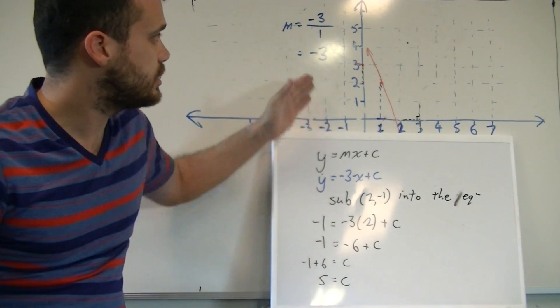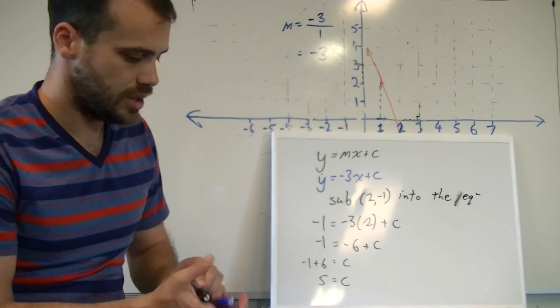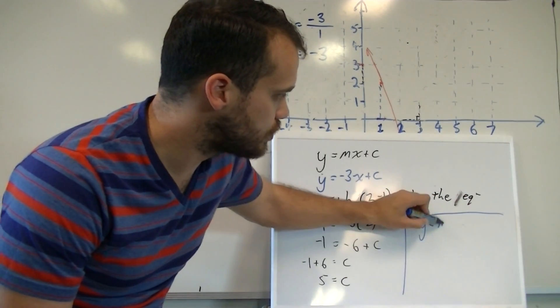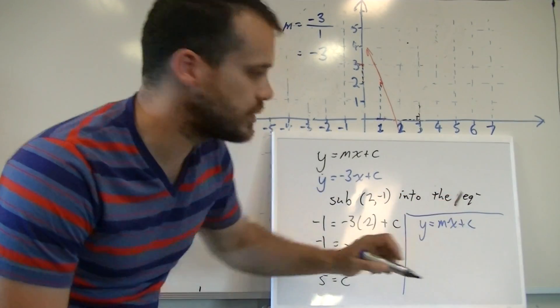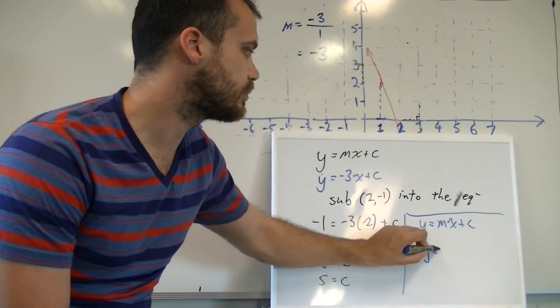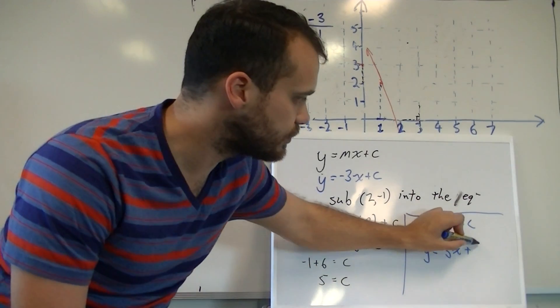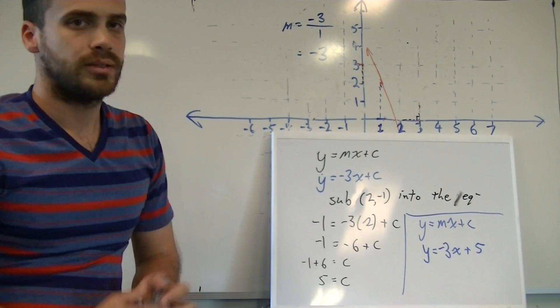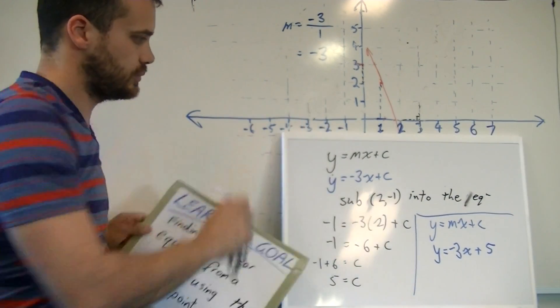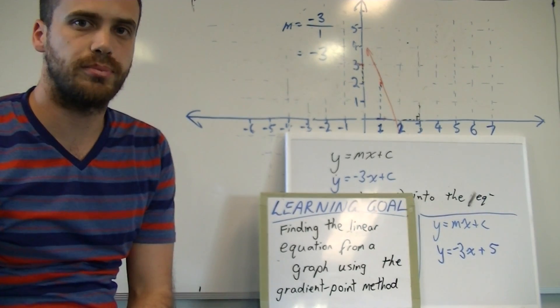We now know that our gradient is negative 3, and we also know that our c value is 5. It's really up to our last step here. The general form is y equals mx plus c, and we now know that our gradient is negative 3, and our c value is positive 5. That is finding the linear equation from a graph using the gradient point method.